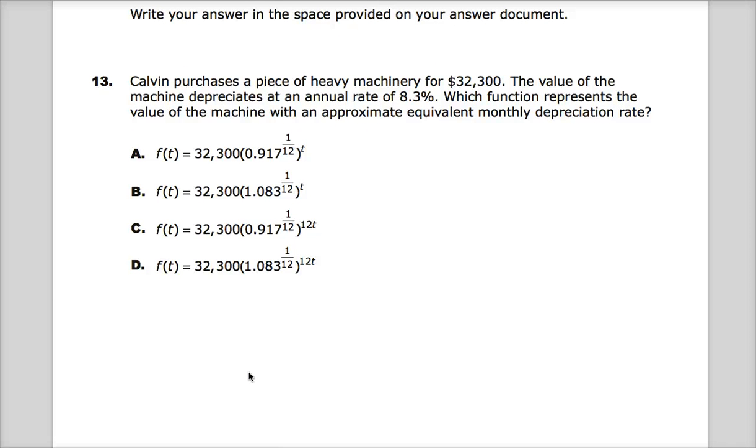Calvin purchases a piece of heavy machinery for $32,300. The value of the machine depreciates. That's a big term here.